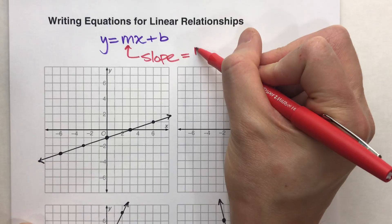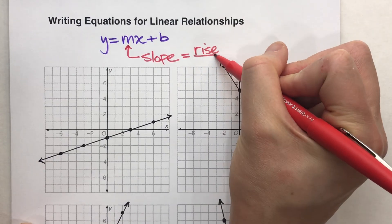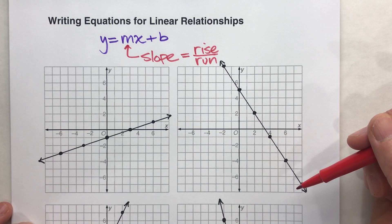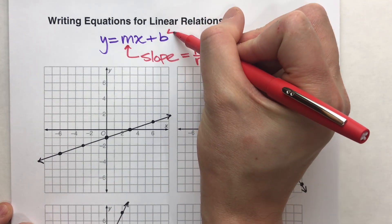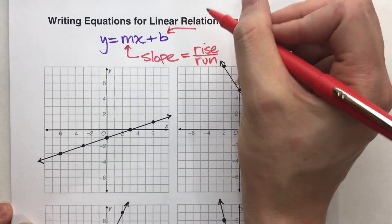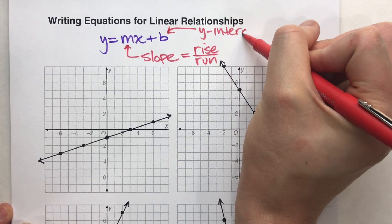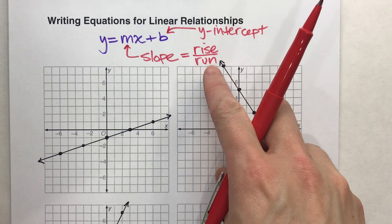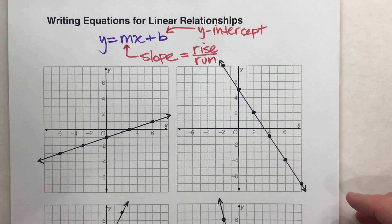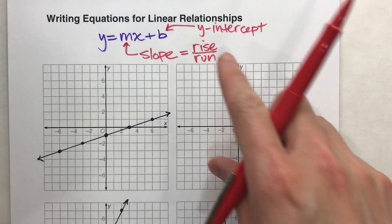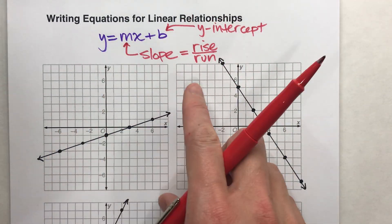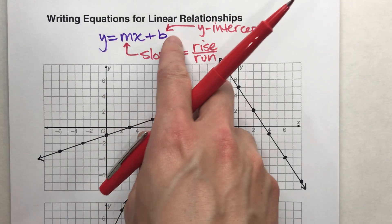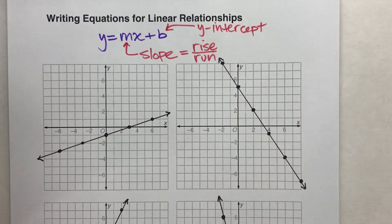Slope is equal to rise over run, meaning the pattern of the points on your line. The b is also usually a number — that is our y-intercept. In other words, it's the point where your line crosses the y-axis. So we need to find two things in order to write our equation, and we just stick them in: y equals some number times x, plus some other number.